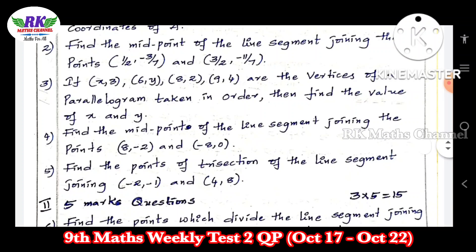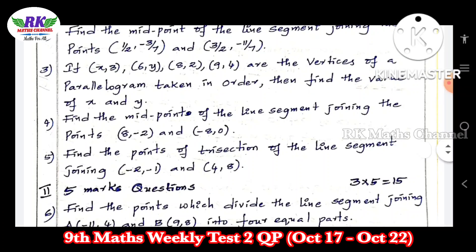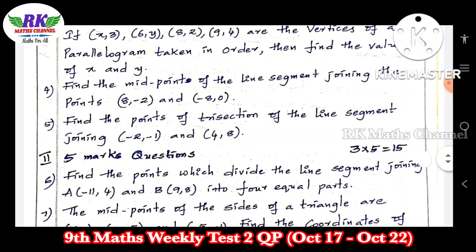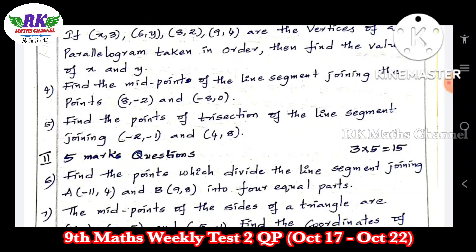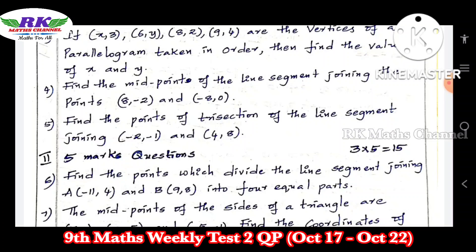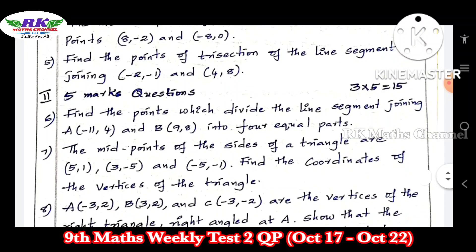Question number three: given four vertices, find the x-value and y-value — this is an important problem about a parallelogram. Question number four: find the midpoints of the line segment. Question number five: find the points of trisection of the line segment. For trisection, the two points divide in ratios two to one and one to two.